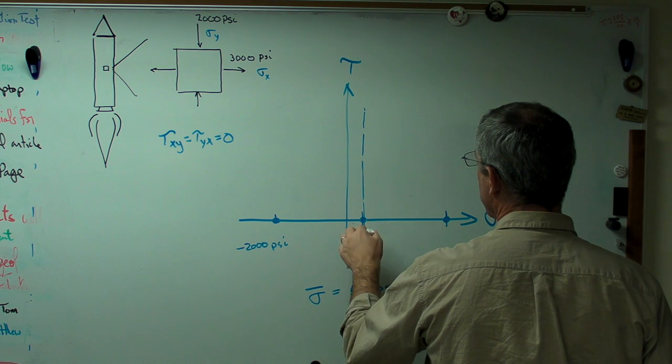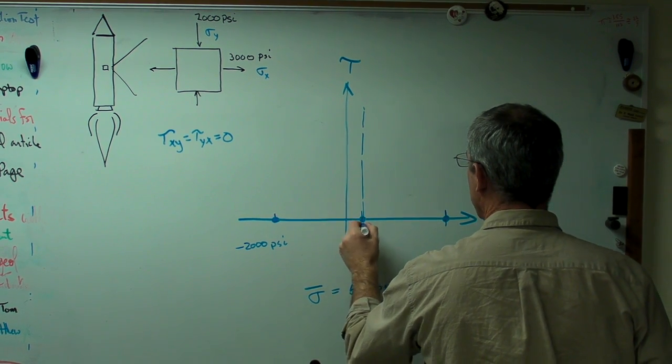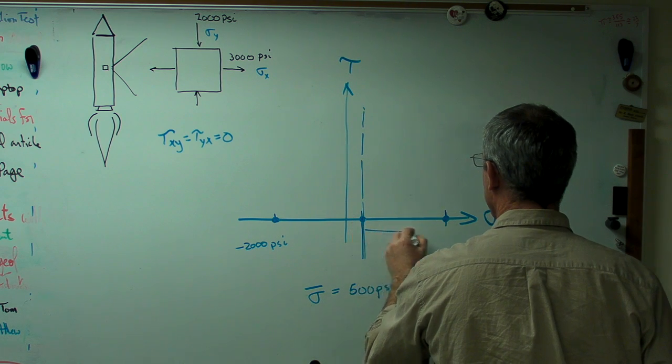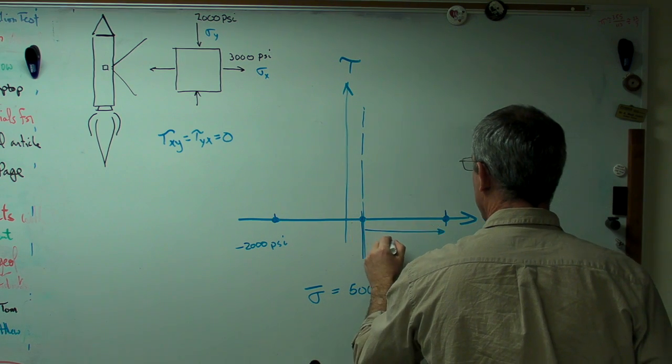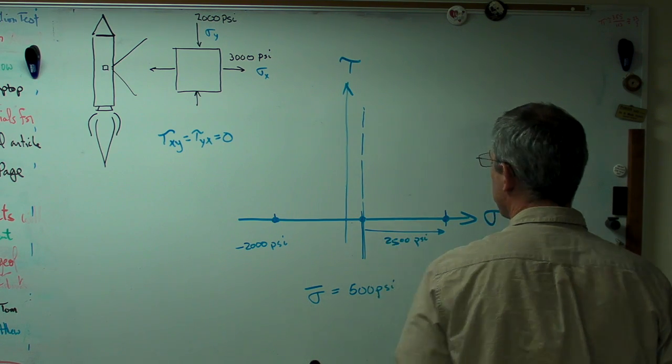So we've got it right there. And the other thing we need to know is the radius. Well, the radius is from the center of the circle to one of the two ends. And so my radius, I'll draw it right there. And that'll be 2,500 psi.